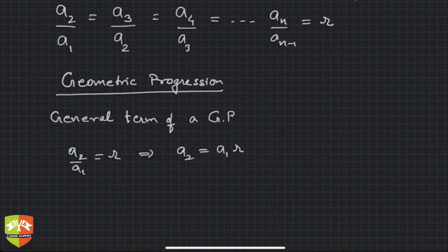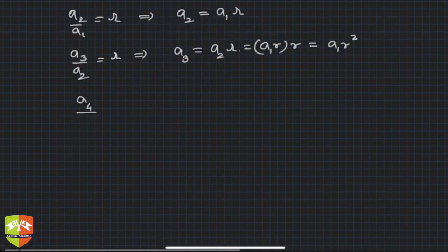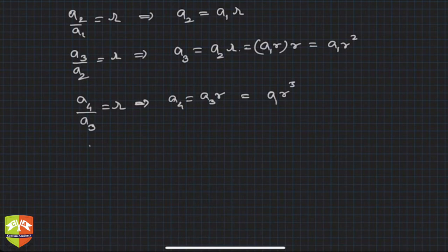You can see a2 by a1 is equal to r, this implies a2 is equal to a1r. Then a3 upon a2 was r again, so this implies a3 is equal to a2 times r, and a2 itself was a1r, so a1r squared. If you see a4 by a3 is equal to r, this implies a4 is equal to a3r, which is equal to a1r cubed. So what do we see? The nth term of a GP will be given by a1r^(n-1).